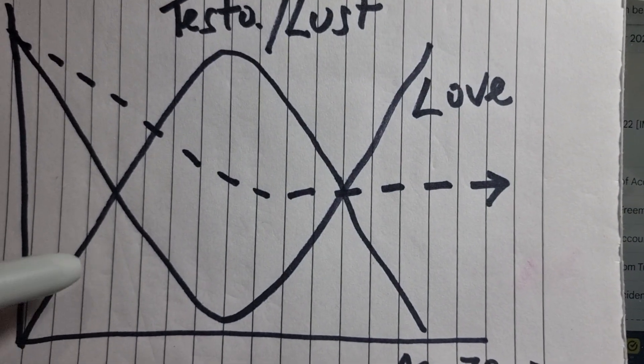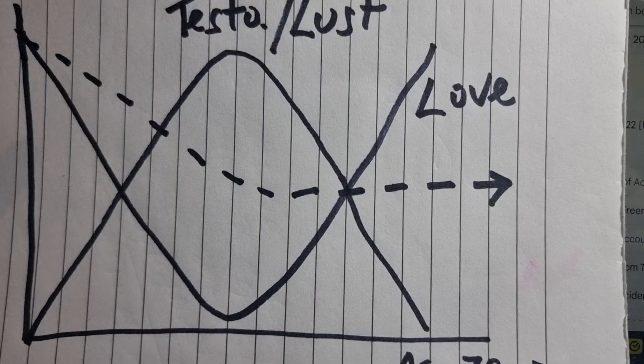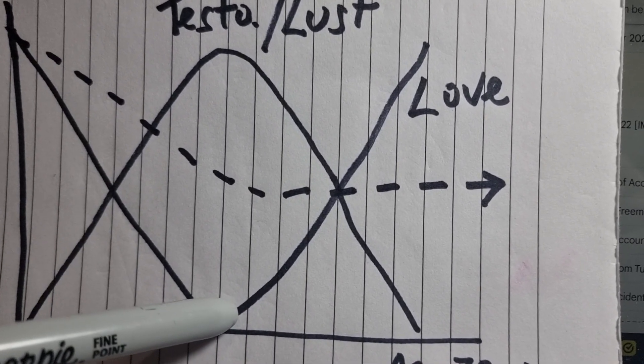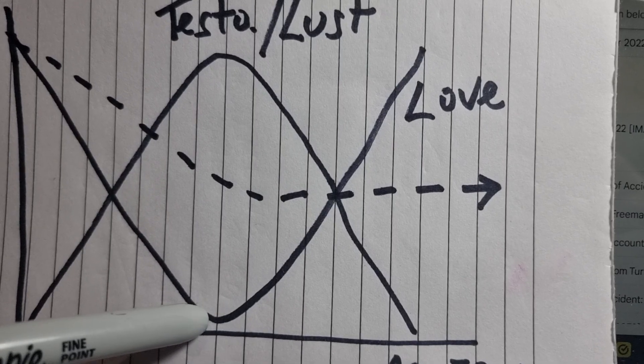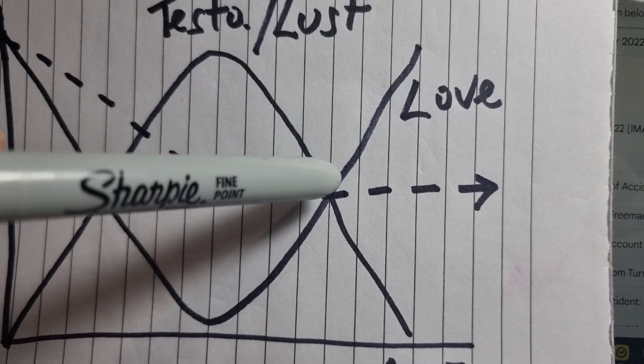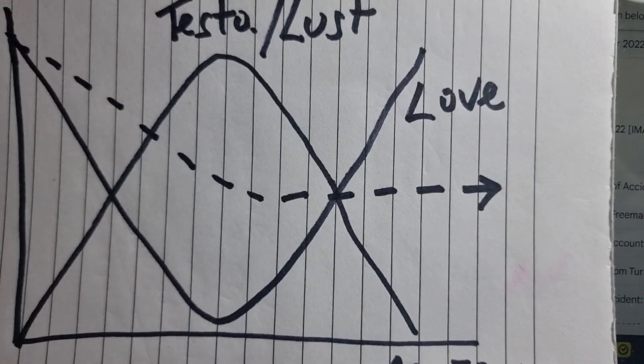So testosterone going up and down, love, value and life family as high, dropping down and then building up again, all coming down to an even keel as you get older.